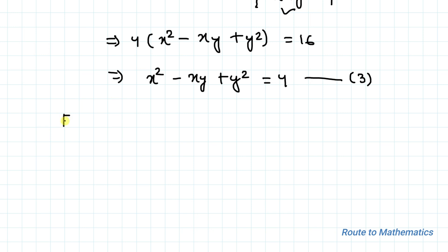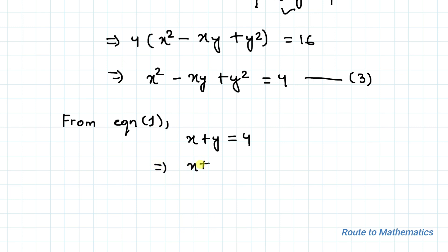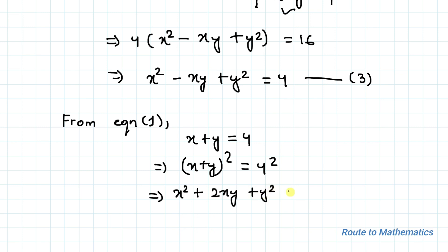From equation 1 we have x plus y equals 4. Squaring both sides, we have x plus y whole squared equals 4 squared. Applying the algebraic identity of a plus b whole squared, we get x squared plus 2xy plus y squared equals 16. Let's take this as equation 4.